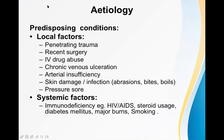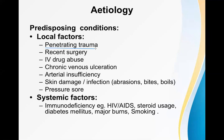In the majority of cases there are predisposing conditions — some local factors, some systemic. Local factors include penetrating trauma, which may be caused by a sharp weapon such as a bullet wound or knife wound. Recent surgery or injury is also a predisposing condition.